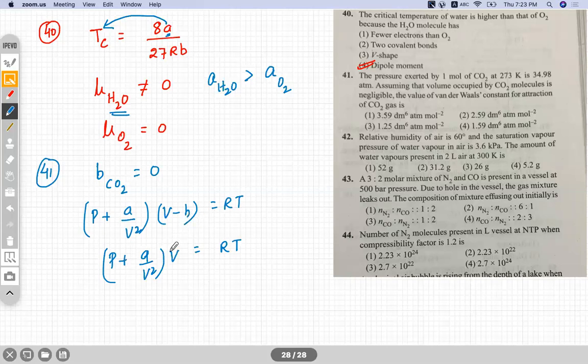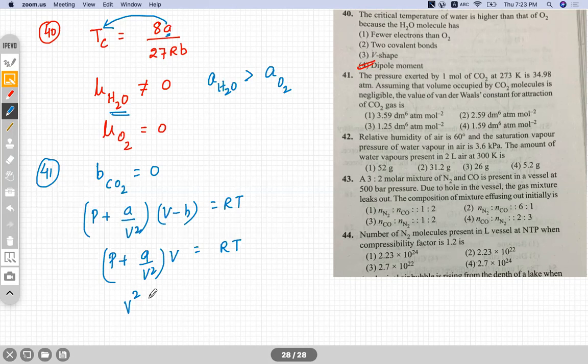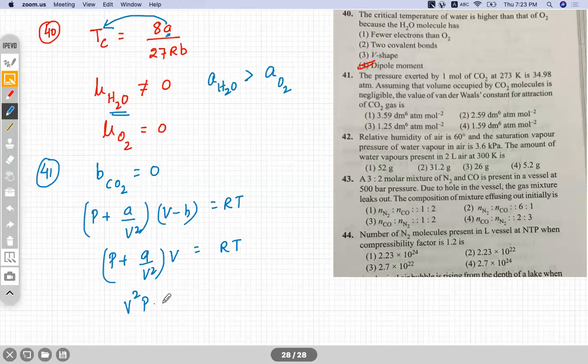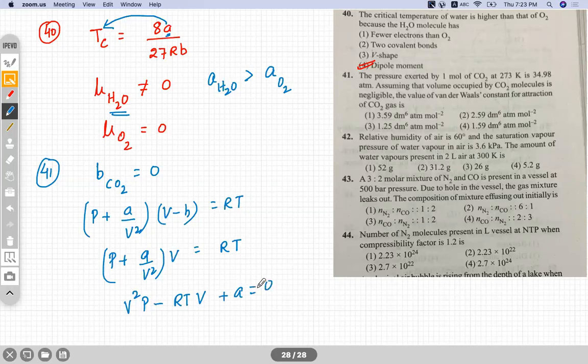And when you solve this, you'll get V square into P minus R into T into V plus A equals zero. So we'll get this quadratic.